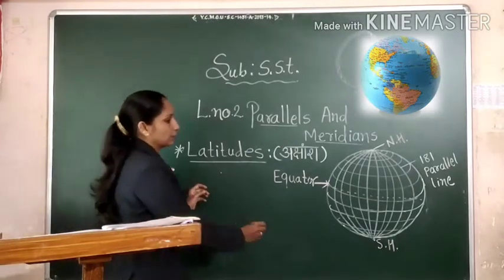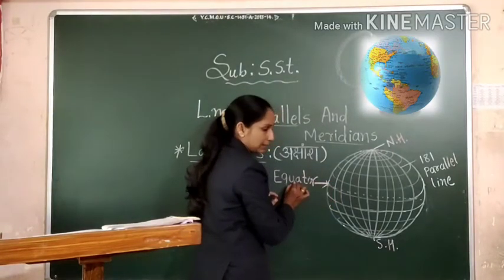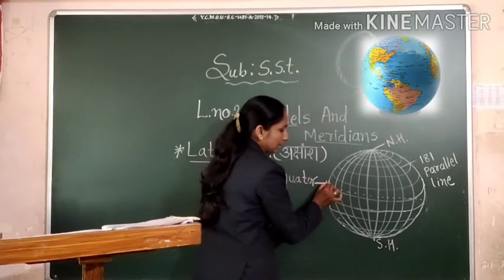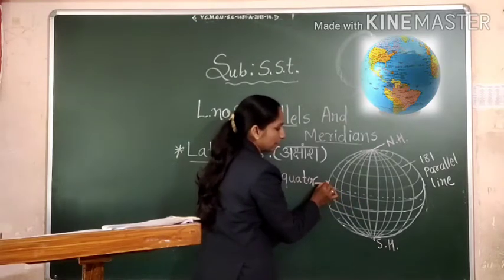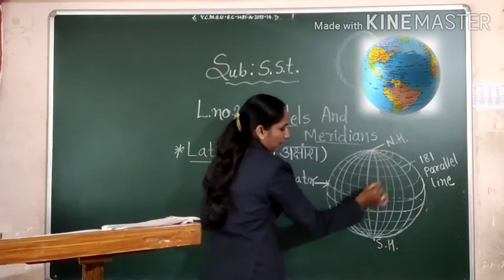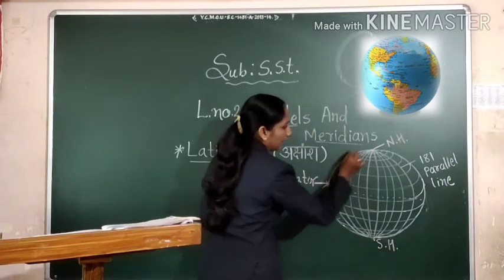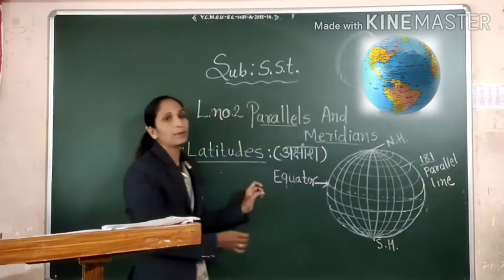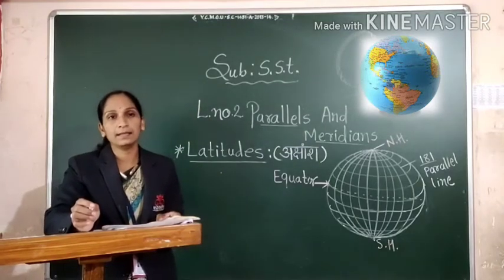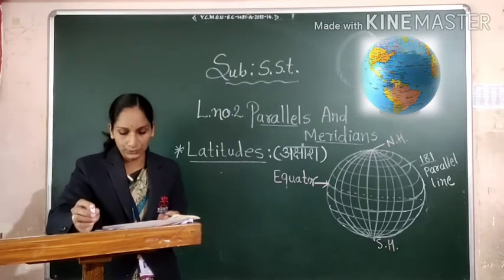So my dear students, you can see properly. Here is equator line. Equator line is the longest line and equator line is divided by two equal parts. First part, northern hemisphere, and other part is the southern hemisphere. And here are 181 parallel lines, 181 parallel lines of latitudes. How many lines? 181. These are the parallel lines, as we say, latitudes.